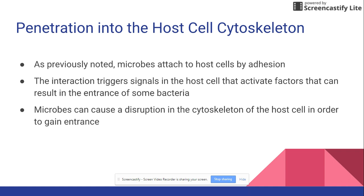Another way that microbes can get inside a host is by actually penetrating the host cell. Microbes can attach to the host cell via adhesion, and sometimes when they attach themselves, it can trigger different effects that alter the outside of the host cell. When that happens, the bacteria or whatever pathogen can actually enter the cell and start taking over.